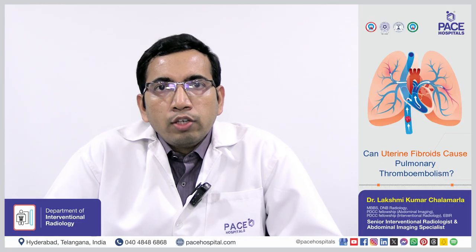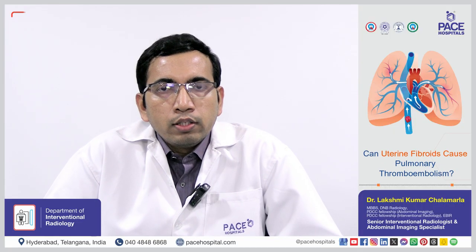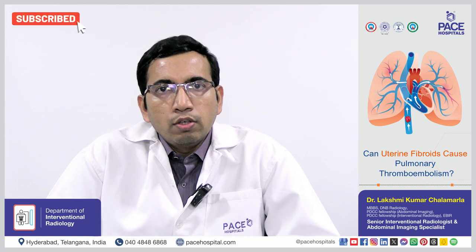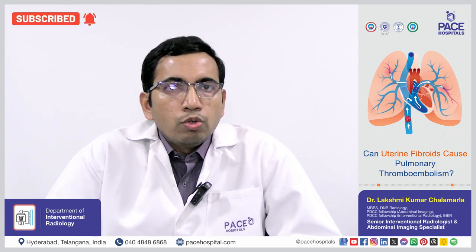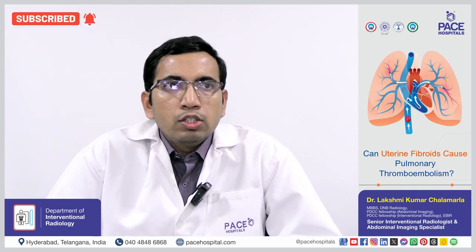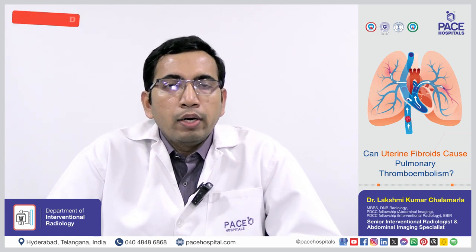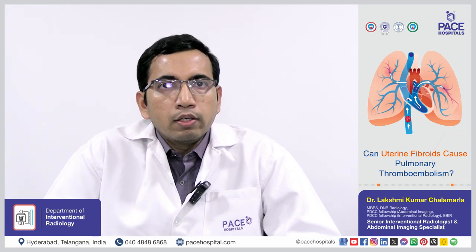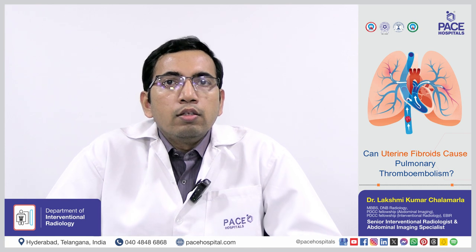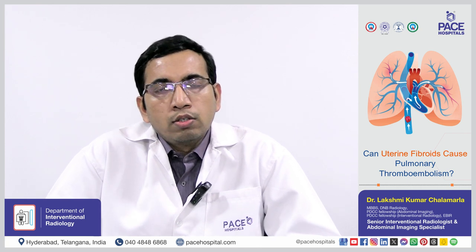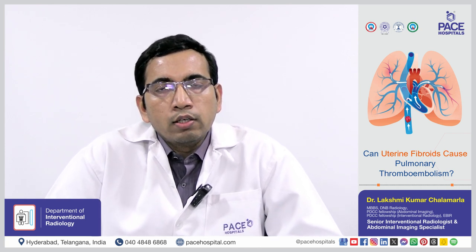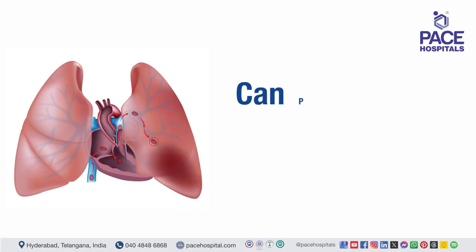Large uterine fibroids can compress the veins in the pelvis, reducing blood flow in those veins and promoting clot formation. These clots can travel up to the lung arteries and cause pulmonary thromboembolism.